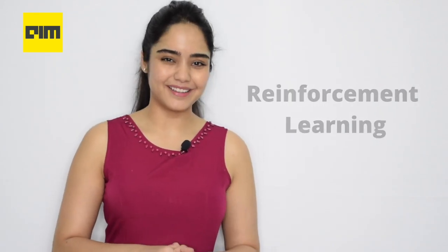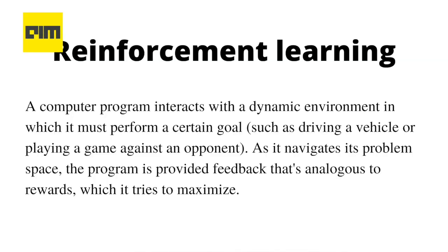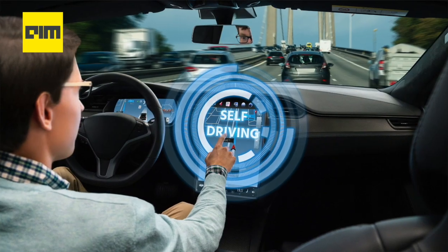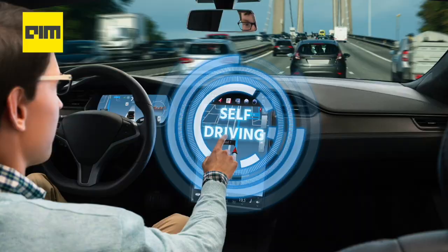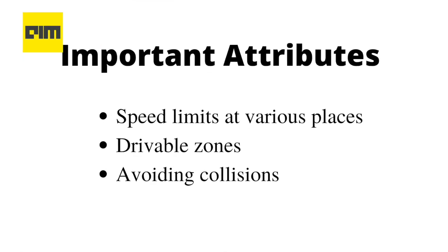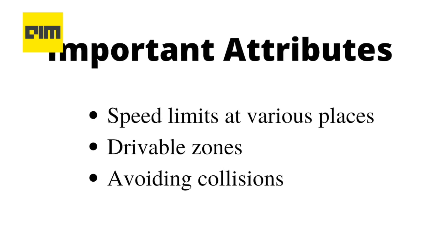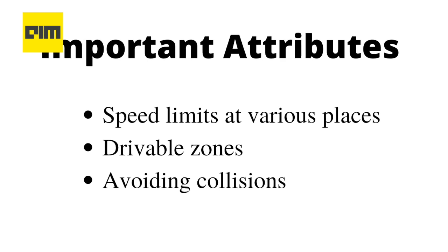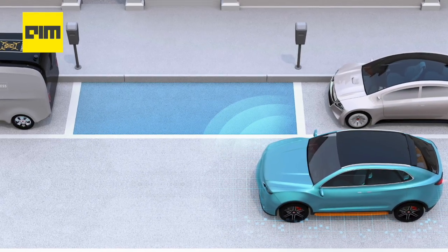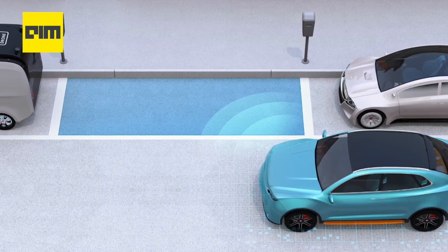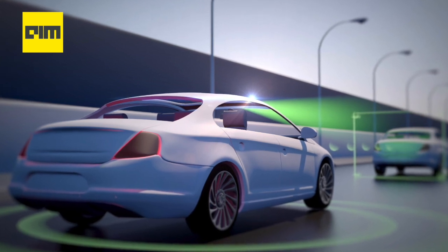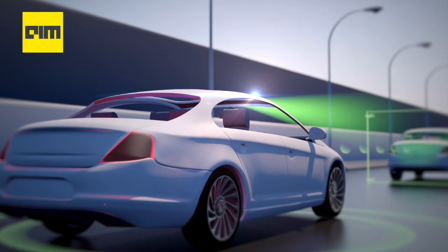Let's take a look at reinforcement learning. A computer program interacts with a dynamic environment in which it must perform a certain goal, such as driving a vehicle or playing a game against an opponent. As it navigates its problem space, the program is provided feedback that analogues to rewards, which it tries to maximize. Various papers have proposed deep reinforcement learning for autonomous driving. In self-driving cars, there are various aspects to consider, such as speed limits at various places, drivable zones, and avoiding collisions. For example, parking can be achieved by learning automatic parking policies. Lane changing can be achieved using Q-learning, while overtaking can be implemented by learning an overtaking policy while avoiding collision and maintaining a steady speed thereafter.